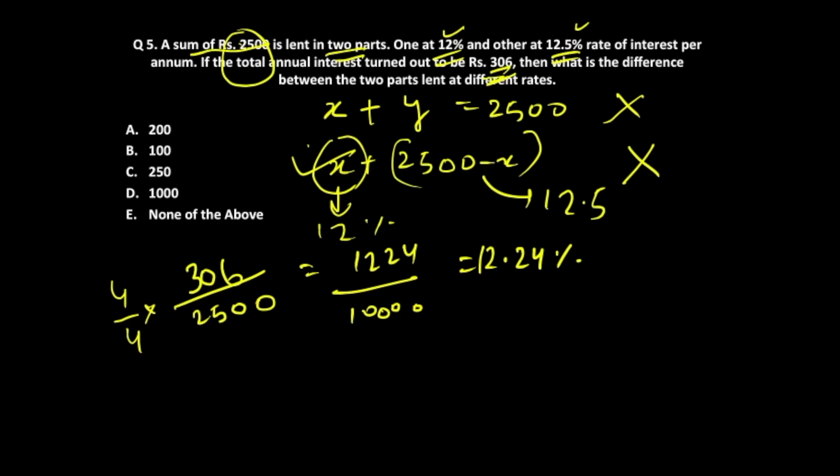Let's use the method of allegation. The first rate of interest is 12%, the other is 12.5%, and the average is 12.24%. The difference here is 0.24, and the difference there is 0.26.